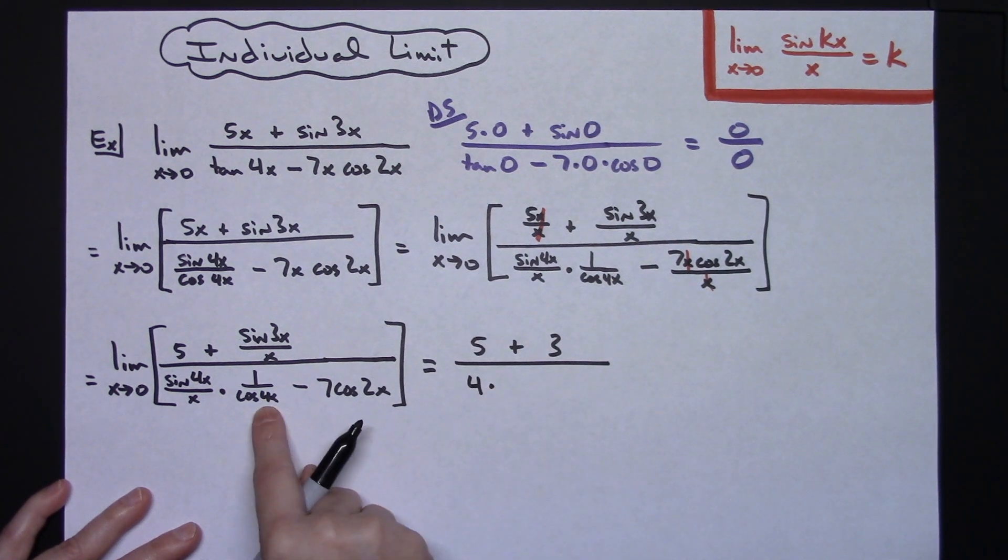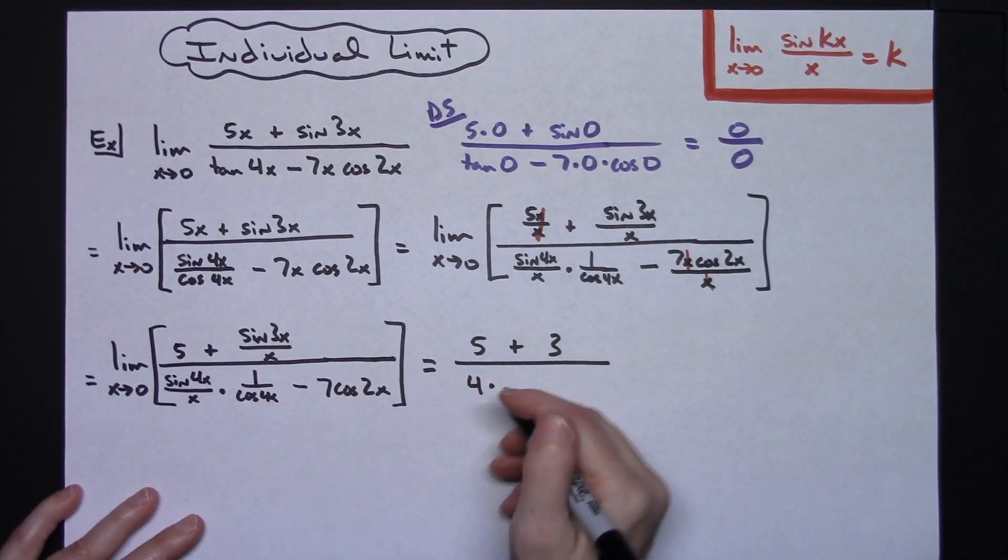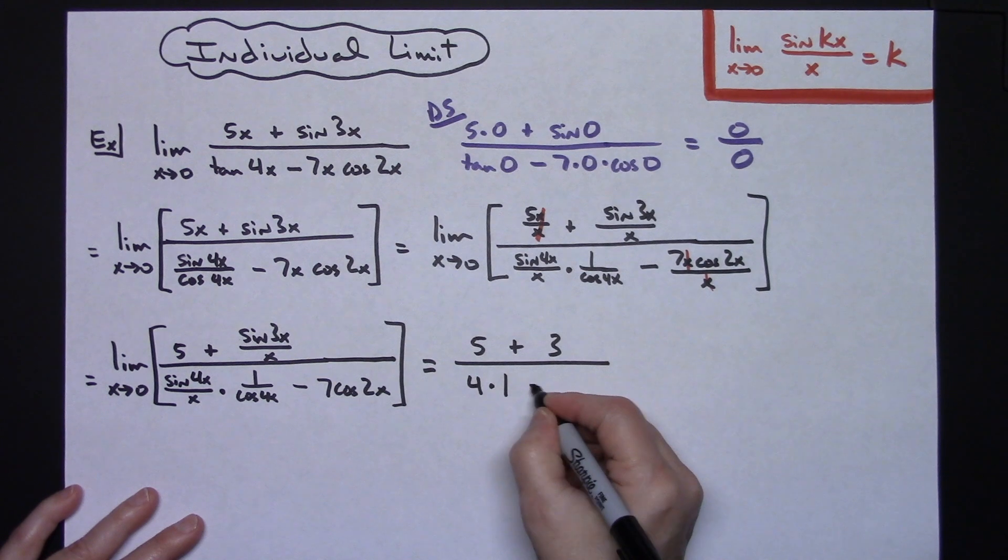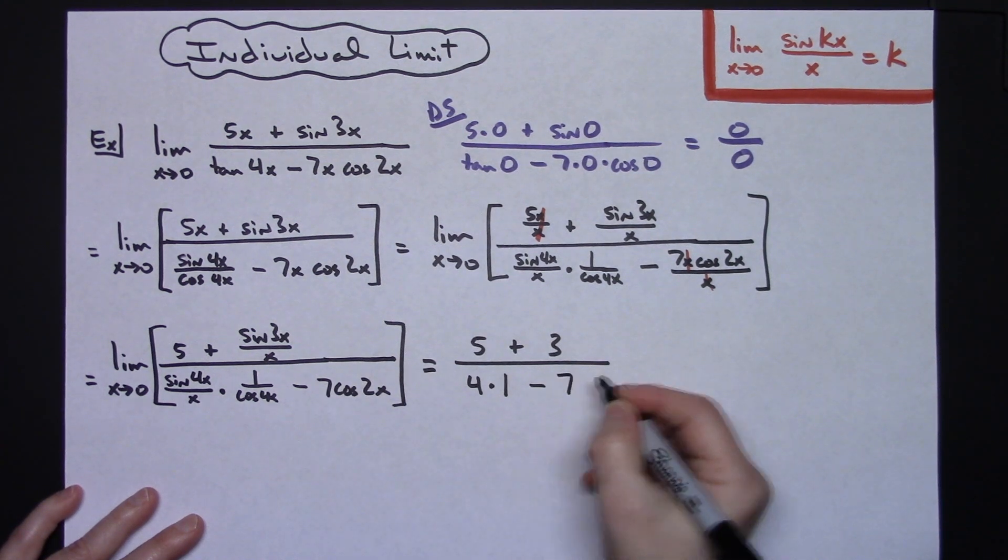If I do a direct substitution of 0 right there, I'm going to have 1 over cosine 0. So that would be 1 over 1 which is just going to be a 1. And then plugging in 0 here, cosine 0 is 1 times that 7 is just going to give me a 7 right there.